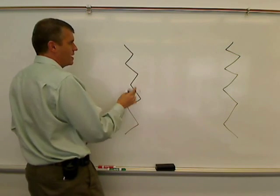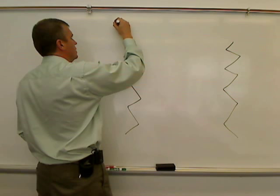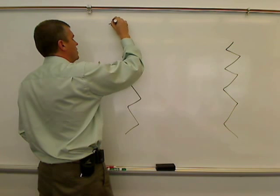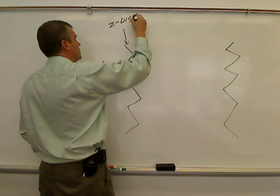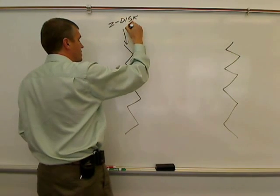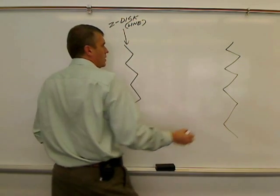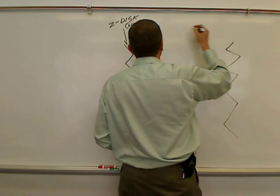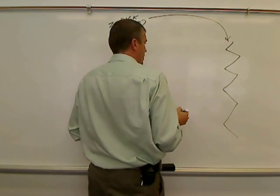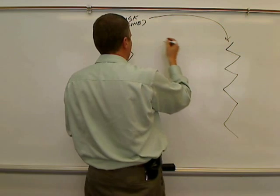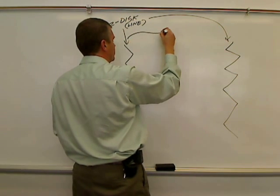Each one of these zigzag lines here is called a Z-line or Z-disc, depending on what the textbook says. From one Z-disc to the next Z-disc is what's called the sarcomere.